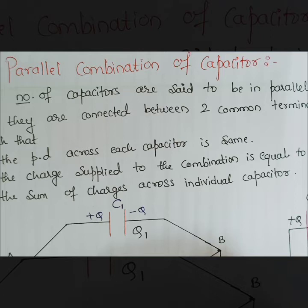So the charge supplied to the combination is equal to the sum of the charges across the individual capacitors. That means when charges are given, here Q1 amount of charges are accumulated and here Q2 amount of charges are accumulated. As I add these two, then I get the total charge supplied to this combination.